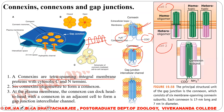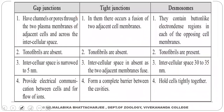These are connexons. This is the open configuration of the connexon and this is the closed configuration. So in brief, we have covered the three major junctions: the tight junctions, the desmosomes, and the connexons — which are also part of the junctional complexes.